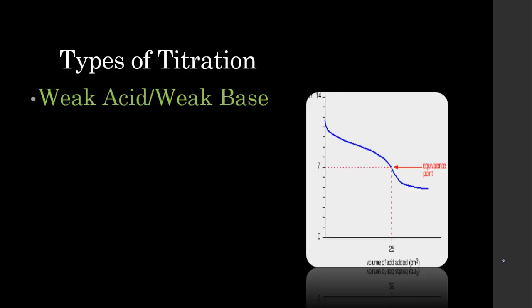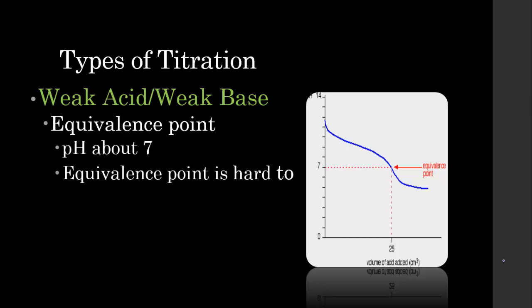And then you can add a weak acid to a weak base. If you're going to guess, you would say your equivalence point is going to be about a pH of 7. However, the equivalence point is going to be very hard to read in this case because you're not going to have that big jump in pH as you've seen in the previous pictures.